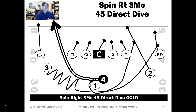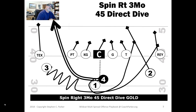We also ran it out of a tight formation I call Speed, where the quarterback's under center. This was like our third-best play — we averaged about six yards a carry. I had two really big fullbacks who ran these plays, so they were definitely tier-one fullbacks and did really well with it. So if you've got a big fullback or halfback that can run this, you could probably run this play. But let's get into how to defend it.